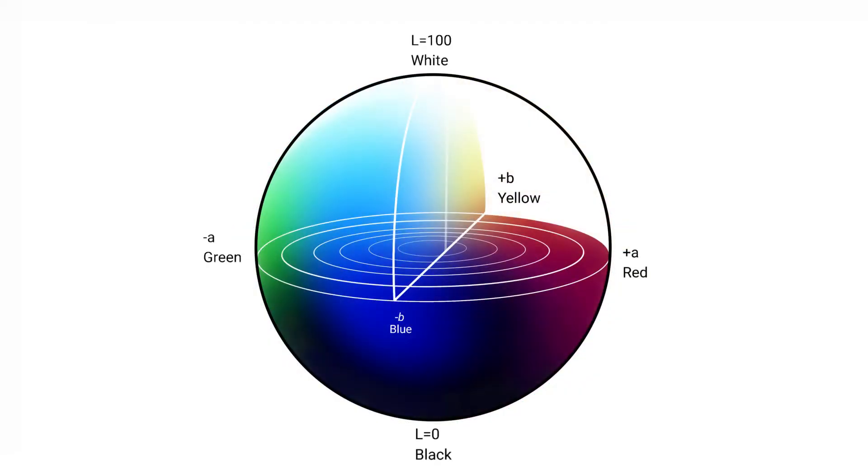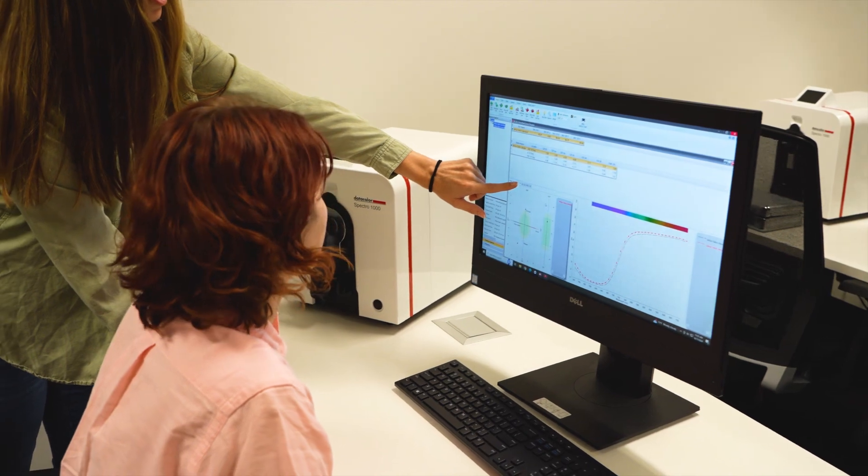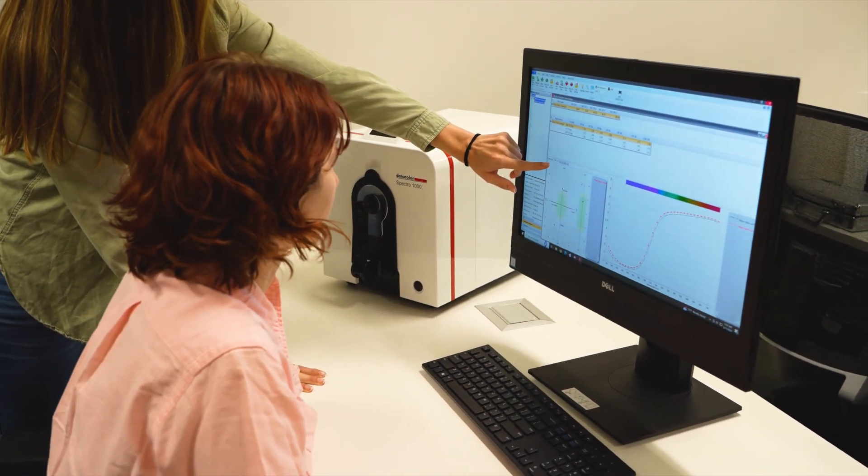Compared to other color models, CLAB can harness the power of precision by plotting coordinates in a uniform color space. This allows us to measure and numerically quantify the difference between two hues with previously unmatched accuracy.